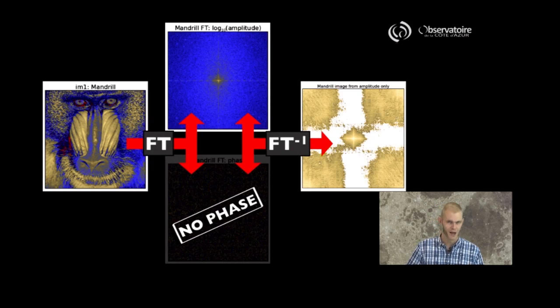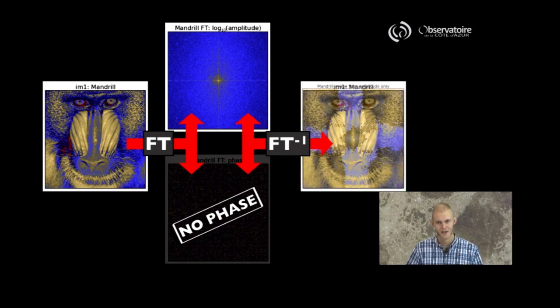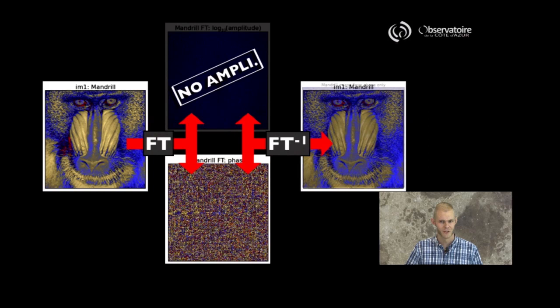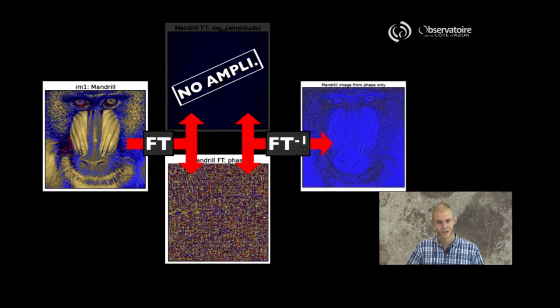If we were to do the opposite, however, and keep the phase and ditch all of the amplitude, well this is what you actually see here. And what you see is that all of the contour information contained in the original image is still present here. We seem to have lost some of the information about the uniform, the semi-uniform illuminated structures. However, all of the contours, all of what you need to be able to look at this image and understand what it is you're looking at, happens to be contained in the phase information.